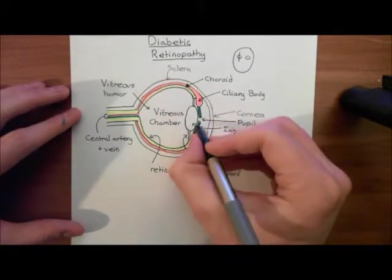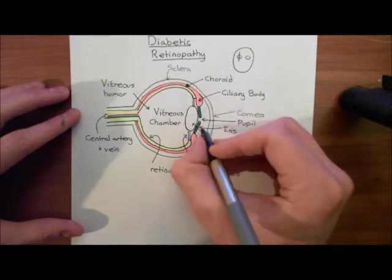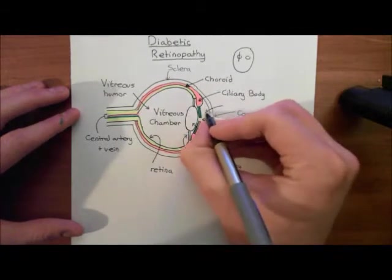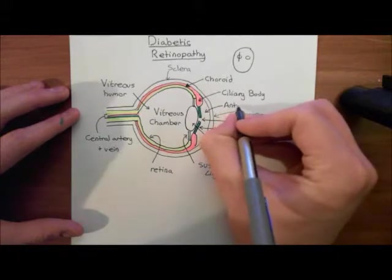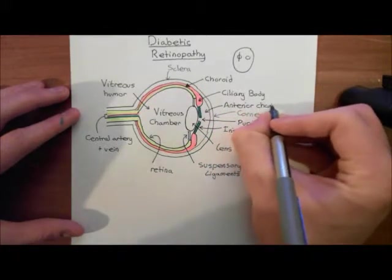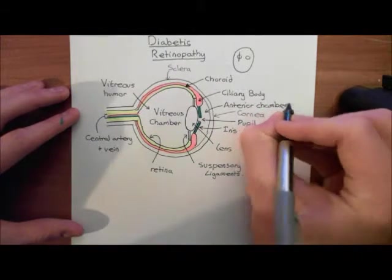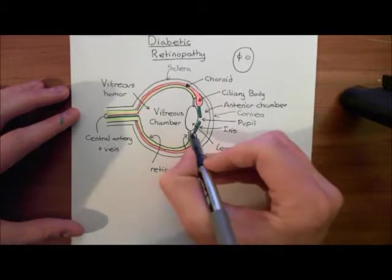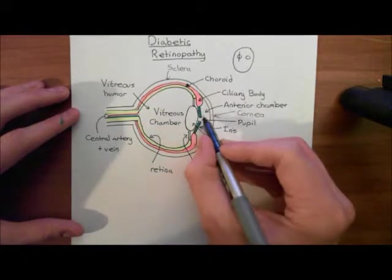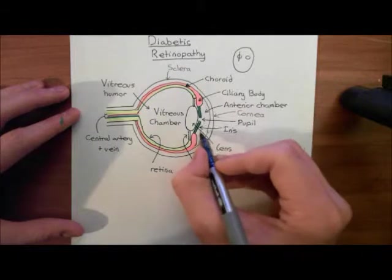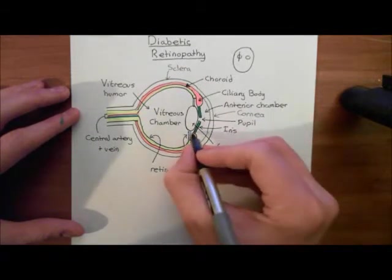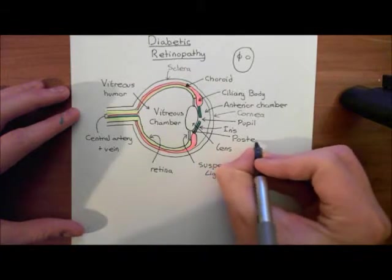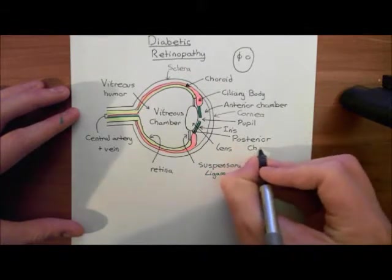And then this portion here, this chamber that we have behind the cornea but in front of the iris, this is known as the anterior chamber. It's continuous with something called the posterior chamber. There is a little space between the iris here and the lens. If you've got a little man in the anterior chamber, he can get into the posterior chamber by going through the pupil.